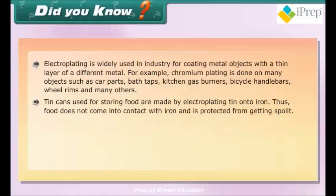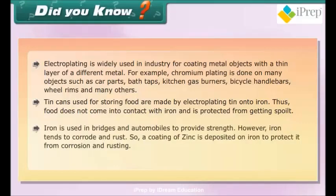Tin cans used for storing food are made by electroplating tin onto iron. Thus food does not come into contact with iron and is protected from getting spoiled. Iron is used in bridges and automobiles to provide strength. However, iron tends to corrode and rust, so a coating of zinc is deposited on iron to protect it from corrosion and rusting.